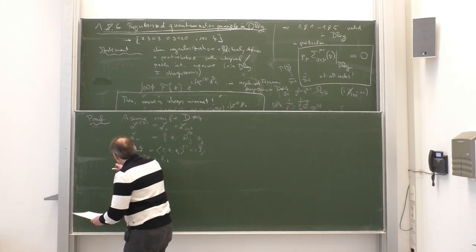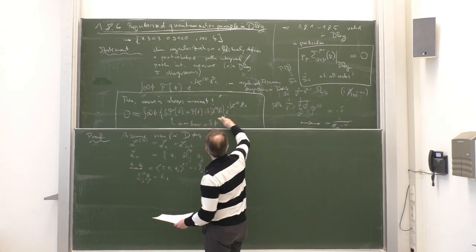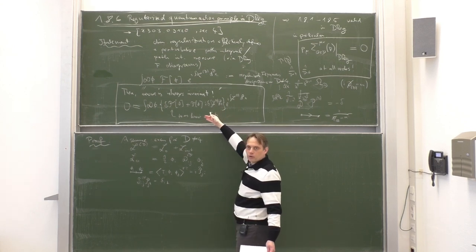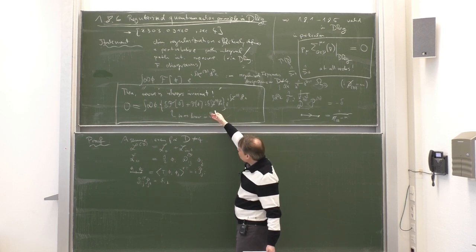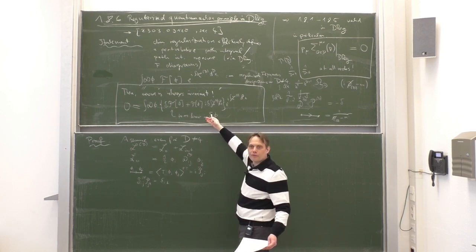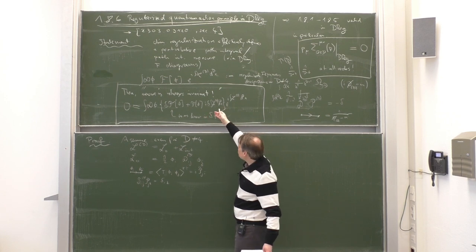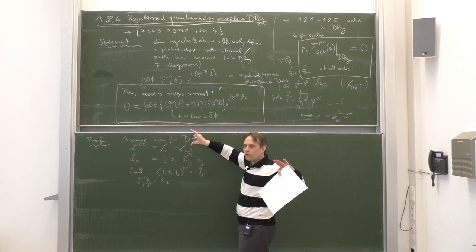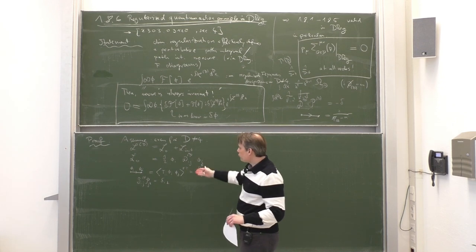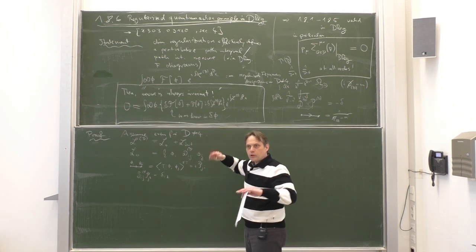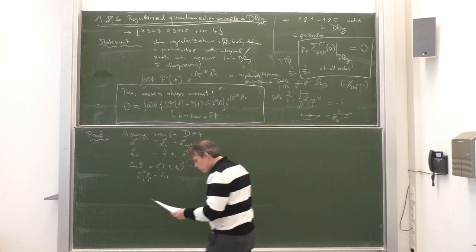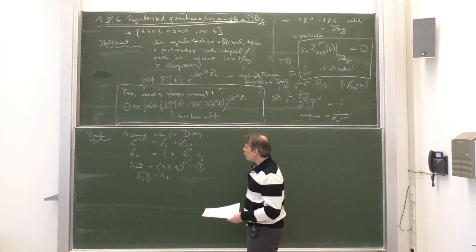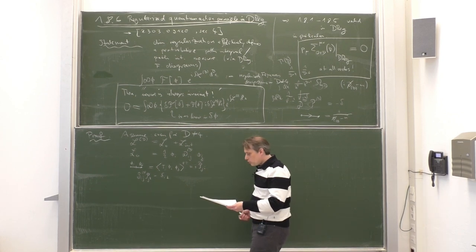Now let us write down the statement and translate it into regularized Feynman diagrams. We need a notation for all Feynman diagrams, and the notation I will use is basically the operator notation for operators in the interaction picture, where we have field operators and Wick contractions between different operators. In this way we generate Feynman graphs in the usual way, and we can have a notation for sets of graphs.